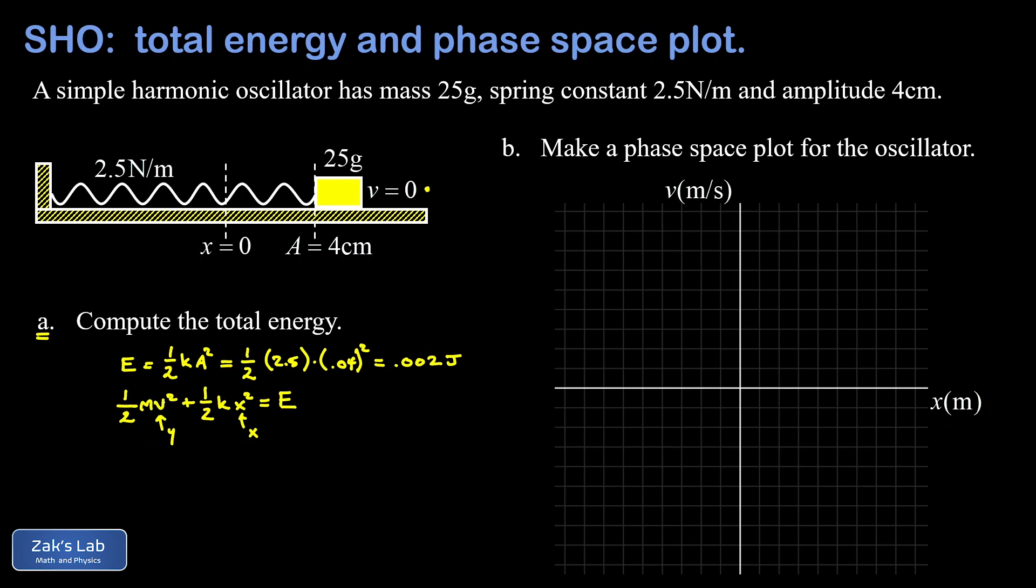The first thing I'm going to do is list the extreme values of x because we were basically just given those. We were told the amplitude is four centimeters, and that means our minimum value of x is going to be negative 0.04 meters—that's four centimeters left of the equilibrium position—and our maximum value of x is going to be positive 0.04 meters. We've immediately got two points on the trajectory in phase space.